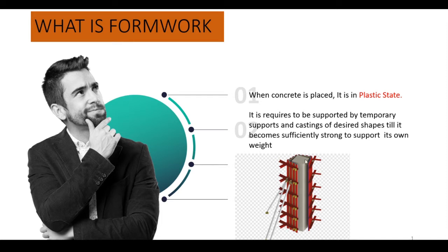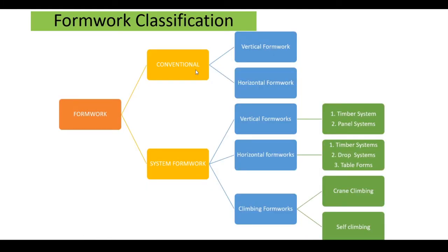Next we will understand the classification of formwork. Formwork is classified into conventional and system. Conventional means without any proper design — they use it on site from wood or steel. In conventional formwork there are two types: vertical and horizontal. In system formwork there is an extra type called climbing. Vertical formwork is subdivided into timber systems and panel systems; horizontal has drop systems and table forms.